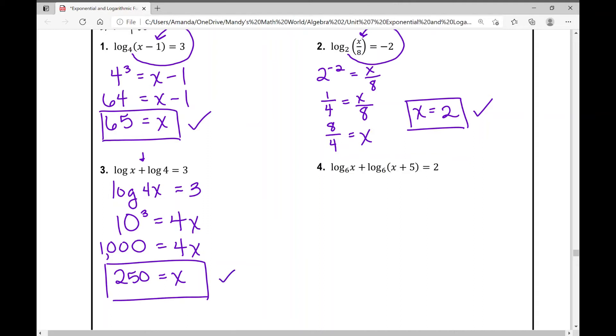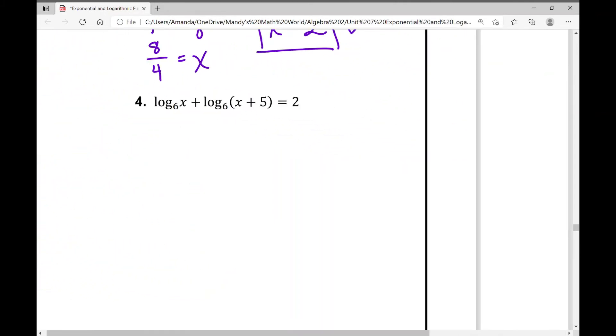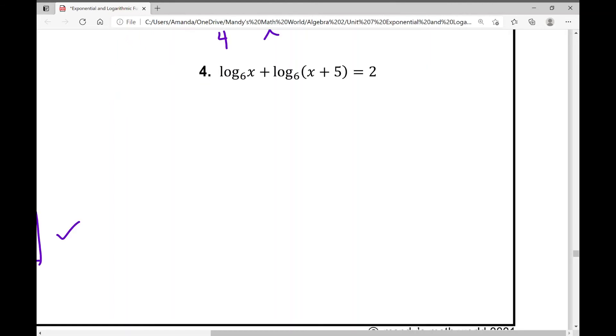Let's look at number four. This is the last problem for today. And I'm actually going to zoom in so I can do a lot for this one. So it says log base six of x plus log base six of x plus five equals two. Again, I have the same base. So I can condense these to log base six of x times x plus five. So now I've condensed it to a single logarithm. And I'm actually going to simplify that x times x plus five. I'm going to do that by distributing that x into each term. So I get x squared plus five x equals two.